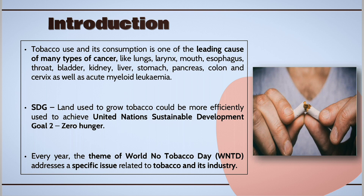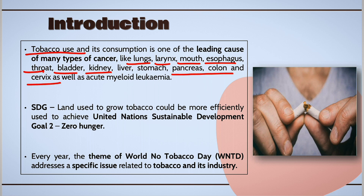It is found that use of tobacco and its products causes various types of cancers, which include lungs, larynx, mouth, esophagus, throat, bladder, kidney, liver, stomach, pancreas, colon, and cervix. It also causes acute myeloid leukemia, which is a kind of blood cancer.